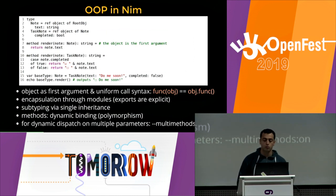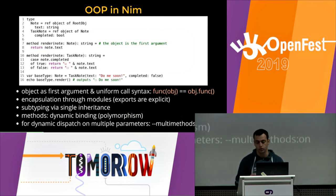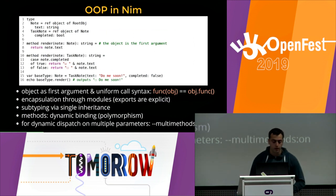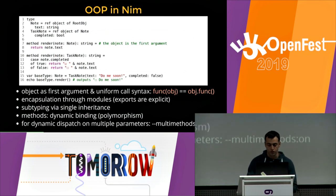NIM also has uniform call syntax. Even though procedures take the object as a first parameter, we can call object.function() instead of only function(object). And if you want dynamic binding — basically polymorphism — you use the method keyword. Then if the argument is a polymorphic type, it will call the right function.